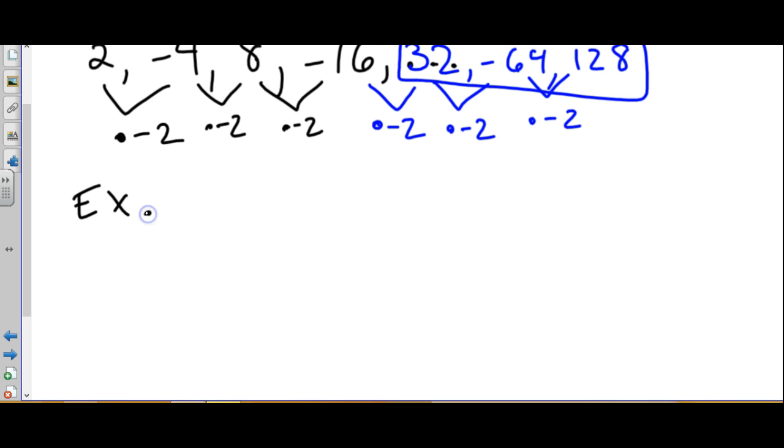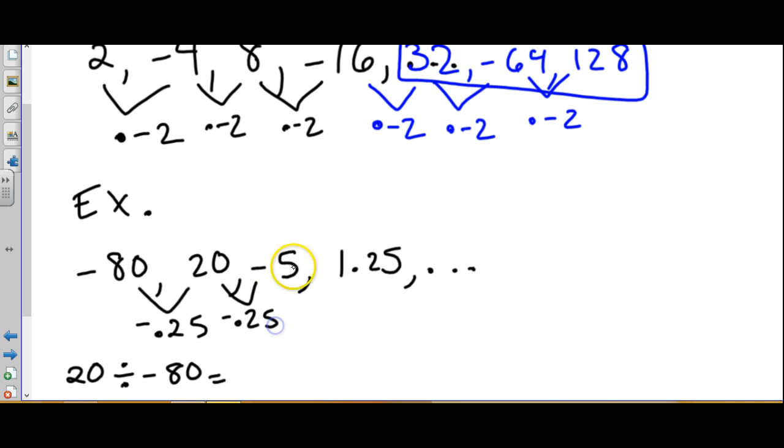Let's do one more example of finding the next three terms. On this one, I can easily identify what I'm dividing by, but we really want this in terms of multiplication. I can figure out I'm dividing by negative 4, but we need it by what we're timesing by. So I'm still going to do division to figure this out. What is 20 divided by negative 80? Well, that is negative 0.25, and you can check. If you multiply 20 by negative 0.25, it gives us 5. If you do it again, it gives positive 1.25.